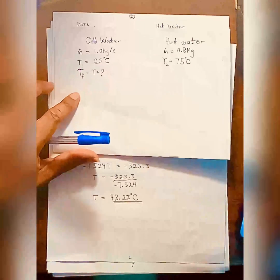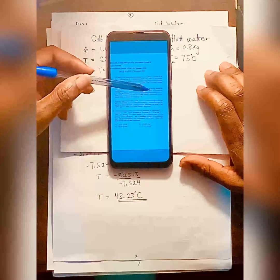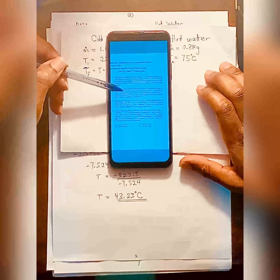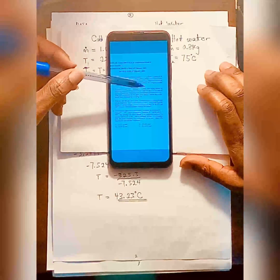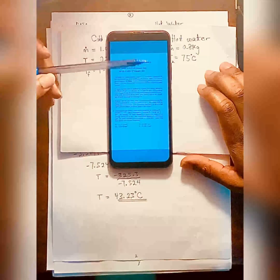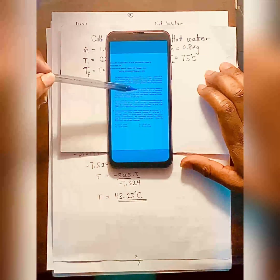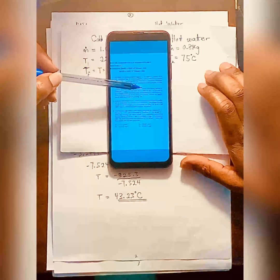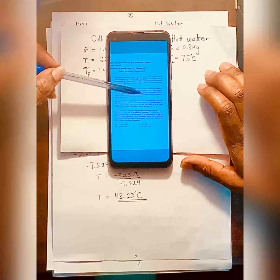Okay, so coming back to this question, a stream of warm water is produced in a steady flow mixing process by combining 1.0 kg per second of cool water at 25 degrees Celsius with 0.8 kg per second of hot water at 75 degrees Celsius during the mixing. Heat is lost to the surrounding at the rate of 30 kJ per second. What is the temperature of warm water?